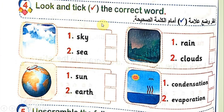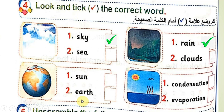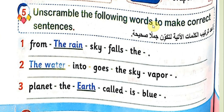Activity 4: Look and tick the correct word. First picture: sky or sea — the picture shows the sky السماء, so tick sky. Second picture: rain or clouds — the rain falling down, so tick rain. Third picture: sun or earth — the picture shows earth, so tick earth. Fourth picture: condensation or evaporation — we can see water vapor rising, so this is evaporation, tick evaporation.